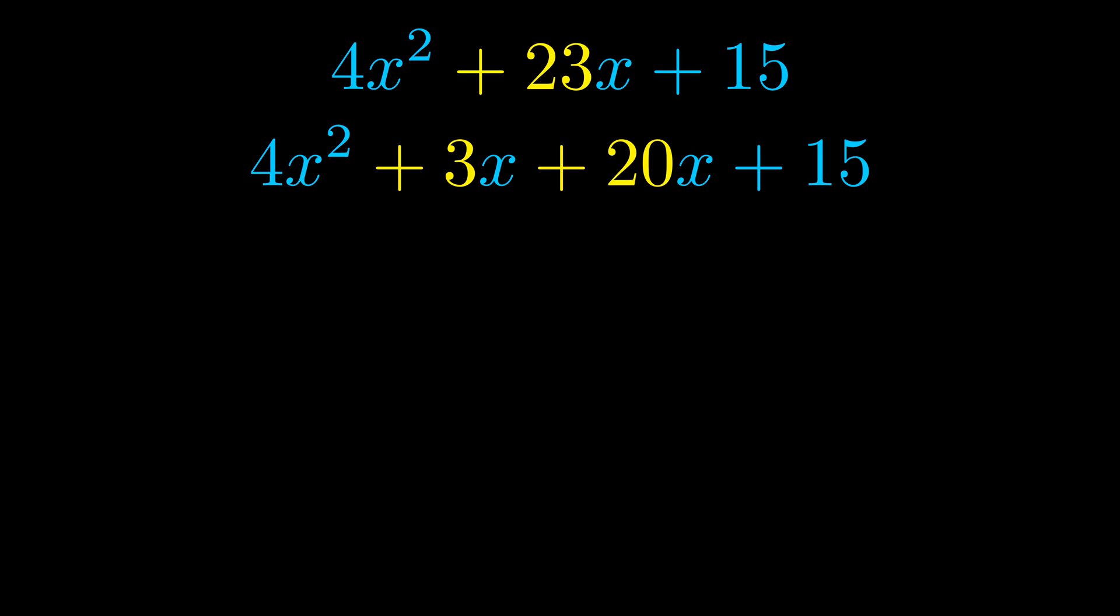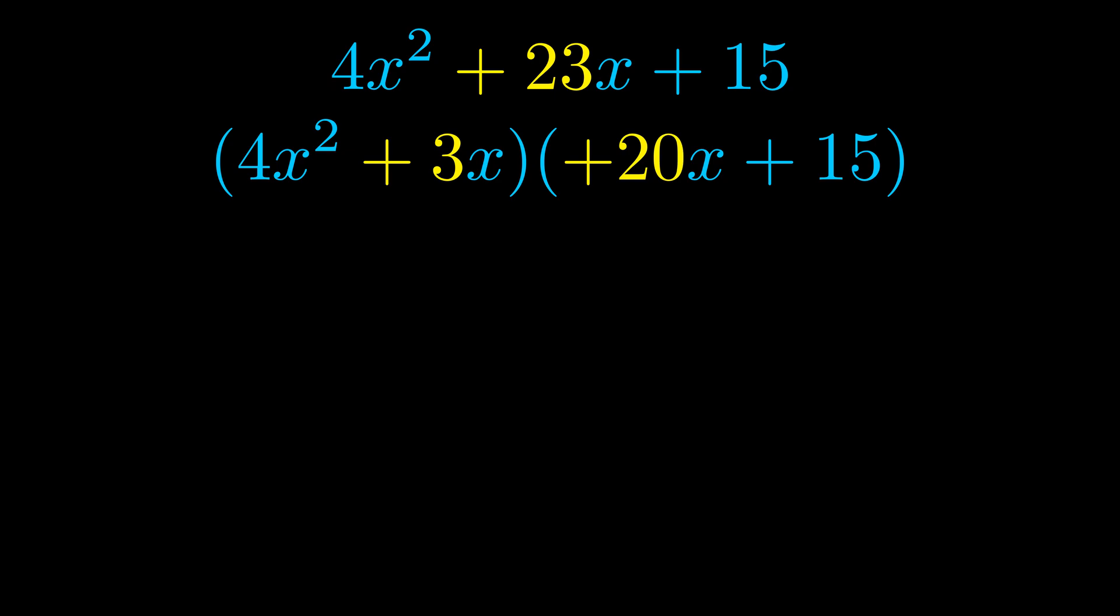Once we've done this, we go ahead and we put parentheses around the first term and the last term. And we do that so that we can take the greatest common factor out of both terms. We can see the greatest common factor is now outside in green.